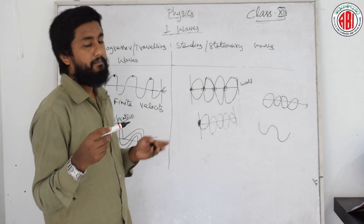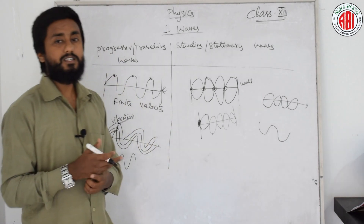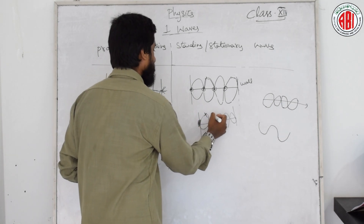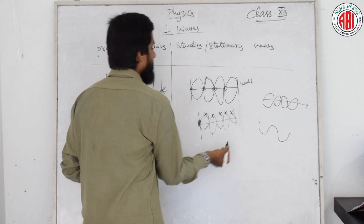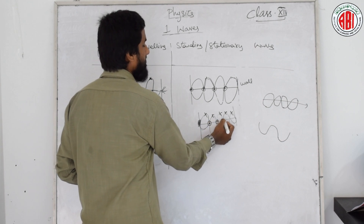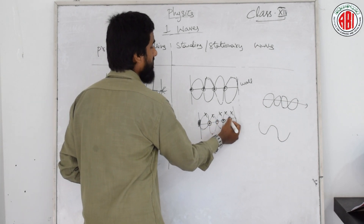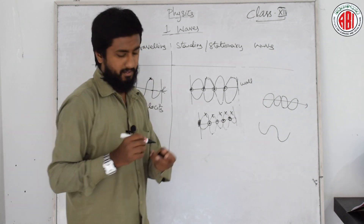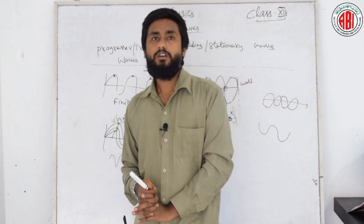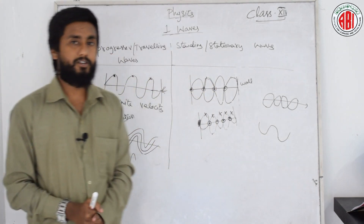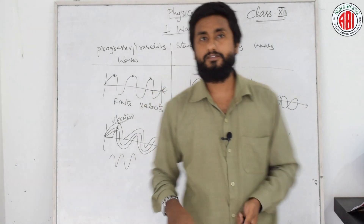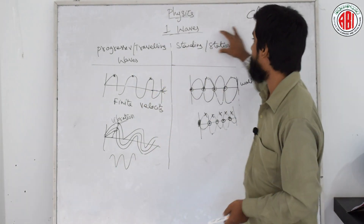The amplitude of the stationary wave is maximum at antinodes, as you can see. The displacement is minimum at the node side — almost zero at nodes — but we do not directly say zero; we say amplitude is minimum at nodes. This is the difference between progressive waves and stationary waves.